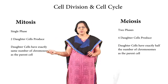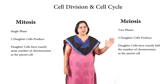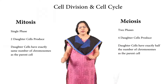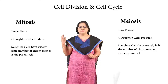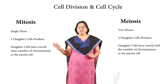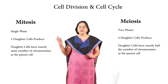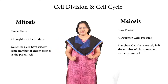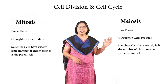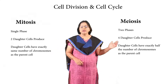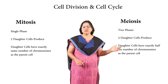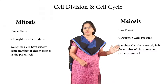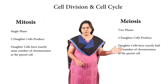There are two daughter cells produced in mitosis, whereas four daughter cells are produced in meiosis. In mitosis, the daughter cells have exactly the same number of chromosomes as the parent cell. In meiosis, the daughter cells called gametes have exactly half the number of chromosomes.